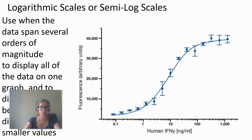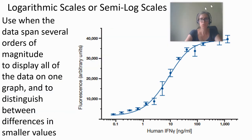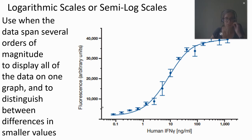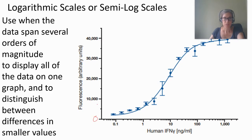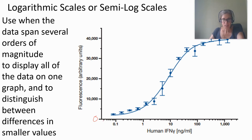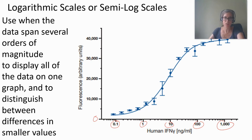The last thing to talk about is semilog and log scales. Normally when you plot data it goes up evenly — like 0, 10,000, 20,000, 30,000, 40,000. But look at this x-axis: it goes from near 0 to 0.1, then 1, then 10, then 100, then 1,000. This is a log scale on one axis, so since the y is not log but the x is, it's a semilog scale. It could be flipped the other way too — it's semilog if just one axis uses a log scale.